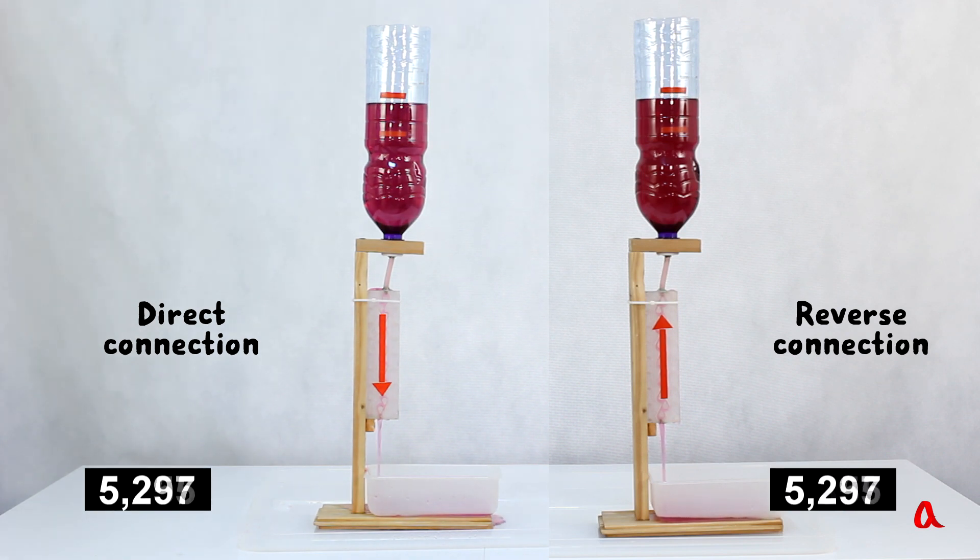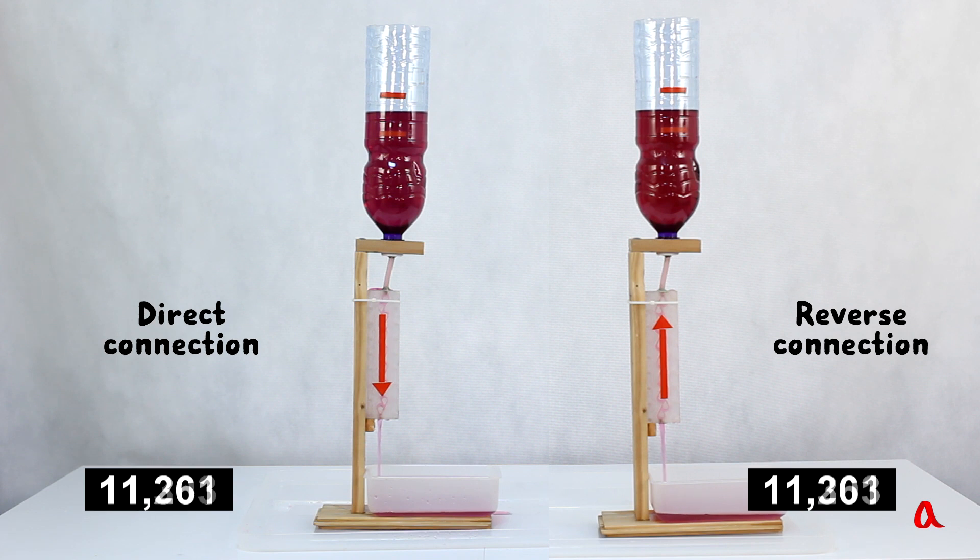With a direct flow valve it takes 26 seconds. Whereas with a reverse flow valve the flowing down takes 22 seconds, which is a shorter time.